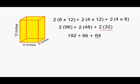When adding all three of those totals together, we get a total surface area of 352 square inches. So it would take 352 square inches to completely cover all six surfaces of this particular rectangular prism.